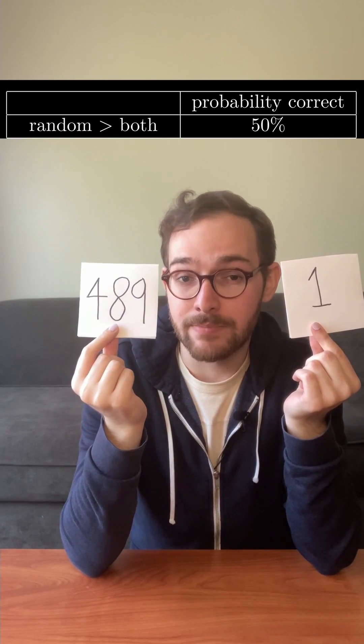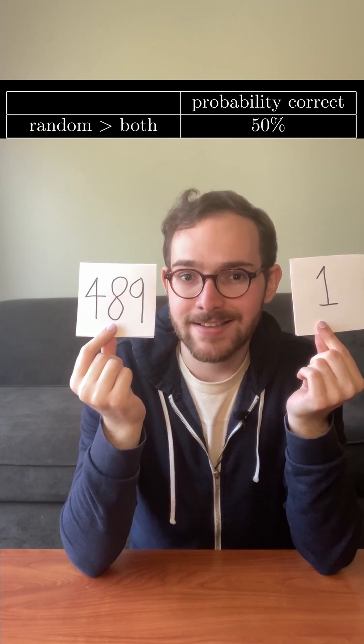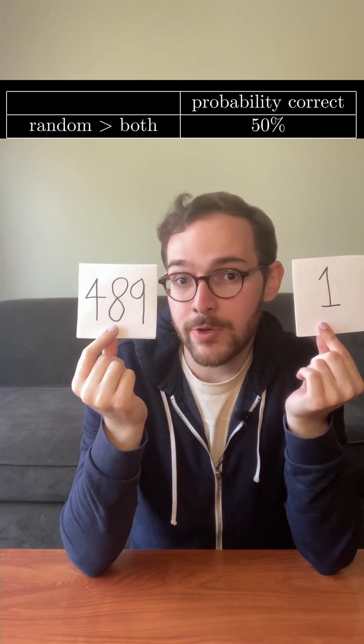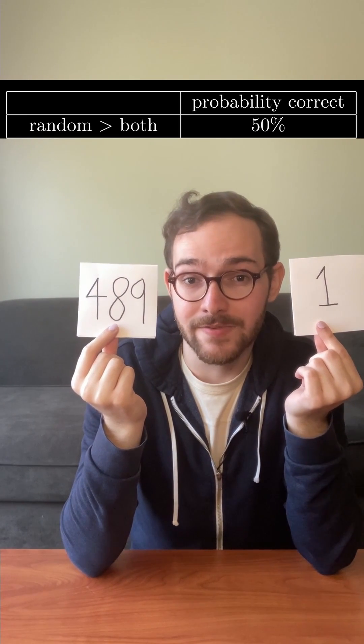That strategy works, and here's why. If the number that you picked is bigger than both of them, then because I revealed one at random, you have a 50% chance of getting it right.